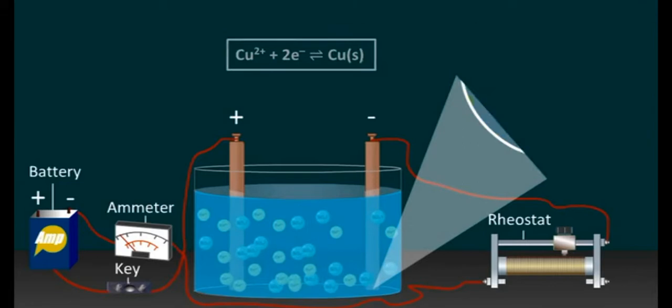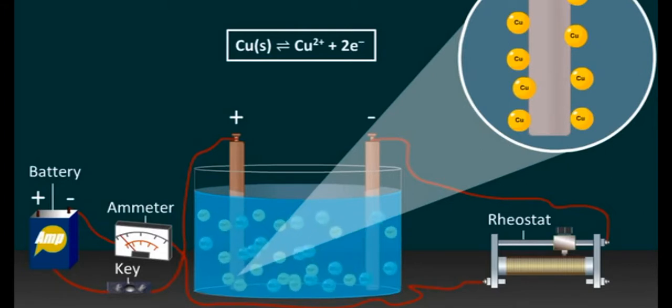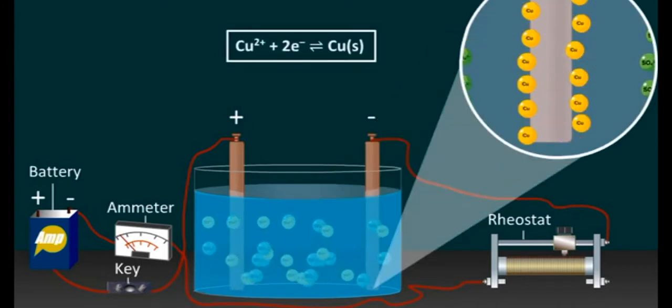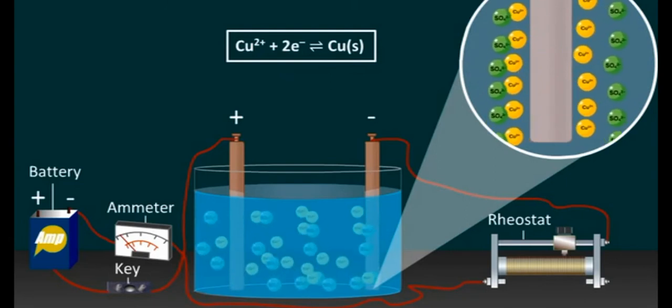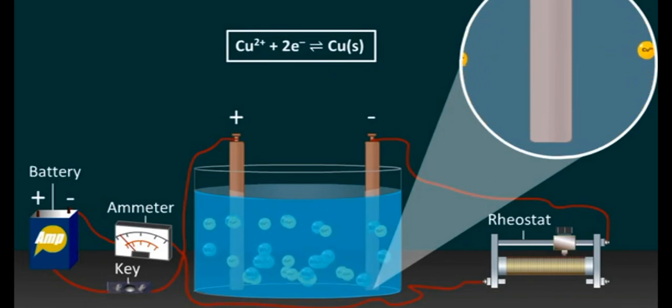In case 2, where the electrode loses electrons or gets oxidized, the electrode potential of electrode is called its oxidation potential. In case 3, where the electrode gains electrons or gets reduced, the electrode potential of electrode is called its reduction potential.